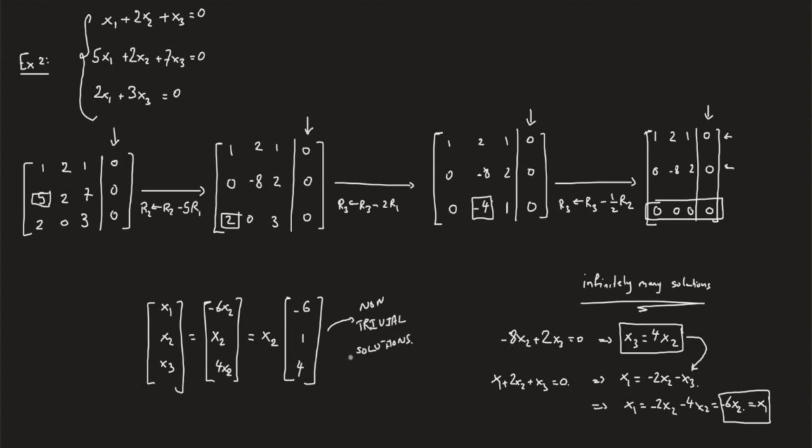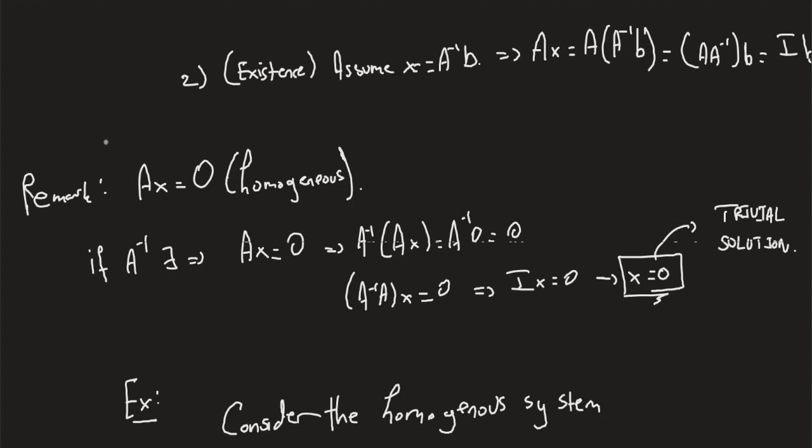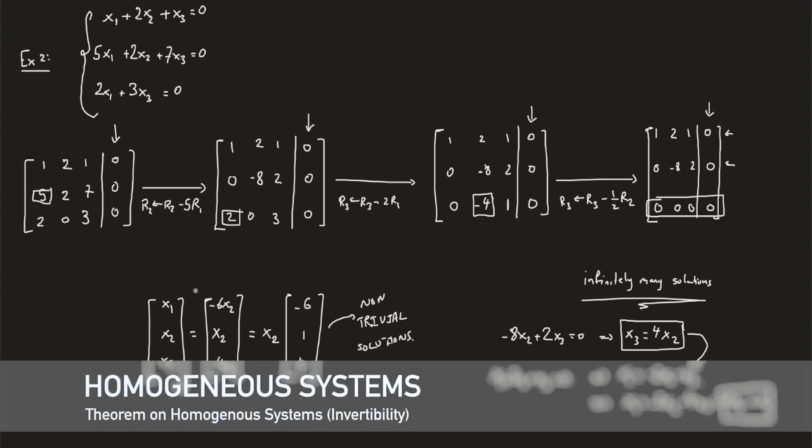In previous lectures, we tapped upon this issue. We said that if we have a homogeneous system, then if A is invertible, we only get a trivial solution. Is the inverse true? That is, if we don't have only one trivial solution, can we say something about the inverse of A? Yes, and this is given by the following theorem.